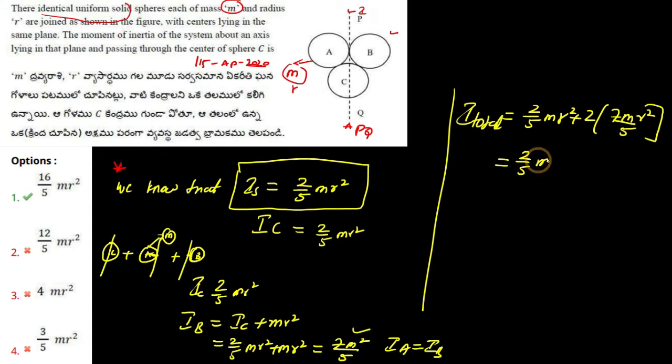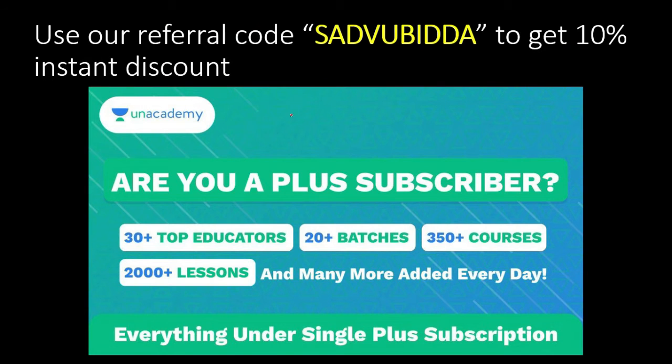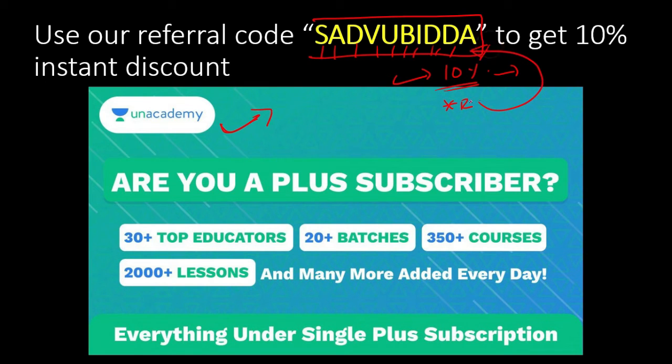So it will be equal to 2 upon 5 M R square plus 14 M R square upon, I am taking M R square upon 5 common, so remaining will be 2 plus 14. So it will be equal to 16 M R square upon 5, which is our answer. Hope that is clear. So our answer will be 16 by 5 M R square.